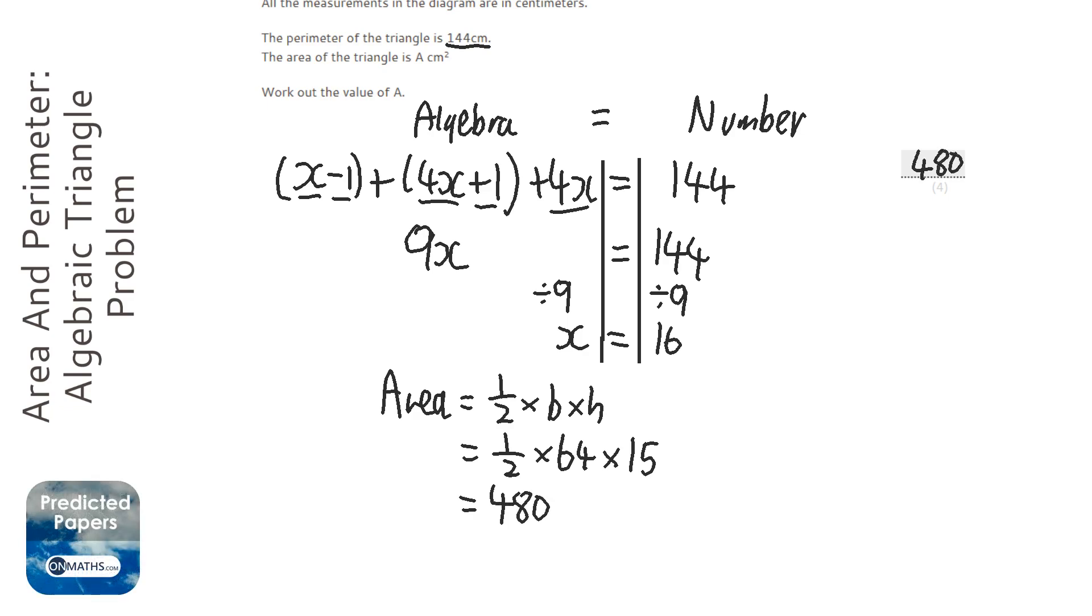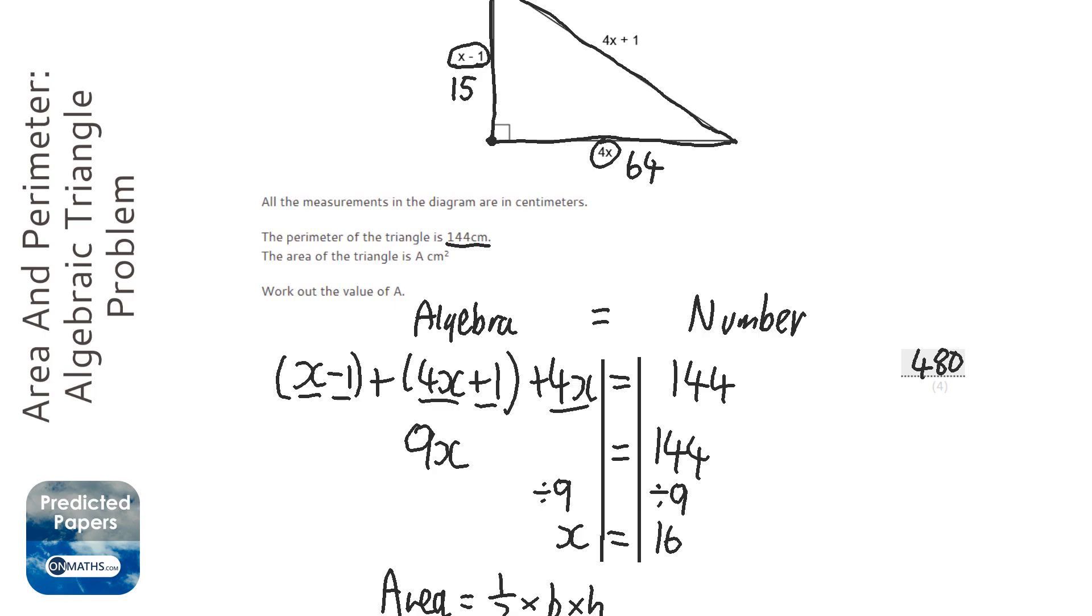Which is my answer. It says the perimeter is in centimeters and it says work out what value of a is. The value of a is the number before the units, so I don't have to put units on this, but you don't lose a mark if you put units on it as well, which would be centimeters squared.